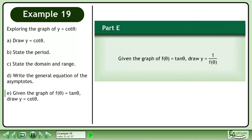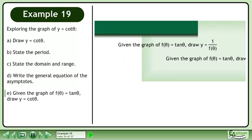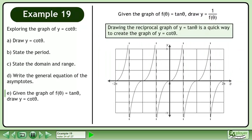Now we'll move on to Part E. Given the graph of f equals tan theta, draw y equals 1 over f. Drawing the reciprocal graph of y equals tan theta is a quick way to create the graph of y equals cotan theta.